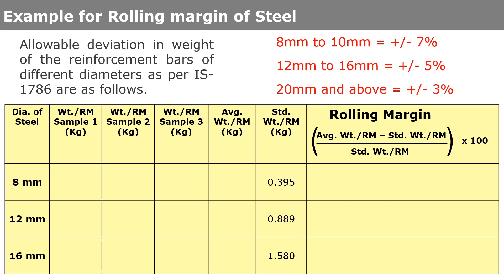Now let's see an example of how we can calculate rolling margin. We have considered 8 mm, 12 mm, and 16 mm diameter bars. Suppose after taking 3 samples of 1 meter length for each diameter — 3 samples for 8 mm, 3 samples for 12 mm, and 3 samples for 16 mm.